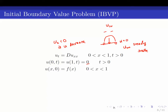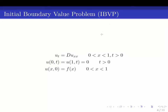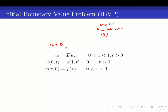Likewise, if the second derivative is positive, the solution is concave up. Here is where zero is, and we expect the steady-state solution to approach u equals zero, but the solution will grow because uxx is positive, which means the derivative with respect to t is positive, so the solution will increase.